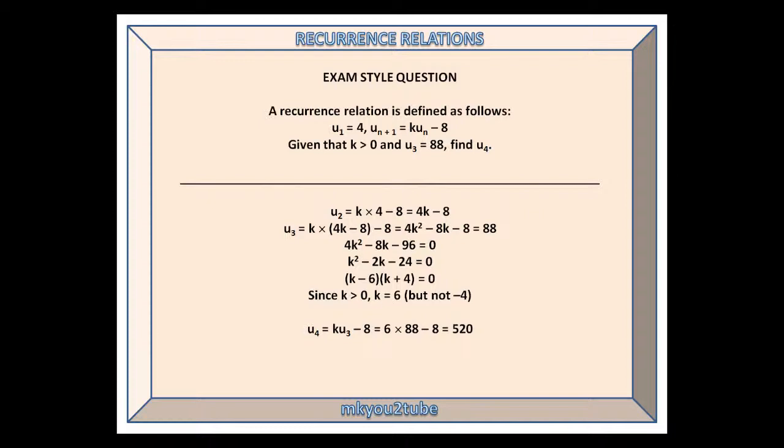Factorize. In theory, this equation has two answers, 6 and minus 4, but we are told in the question that k is positive. So we know that k must equal 6, and we can then use the third term and the rule 6u_n minus 8 to find that the fourth term is 520.